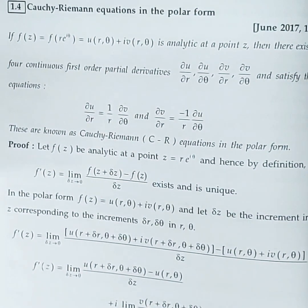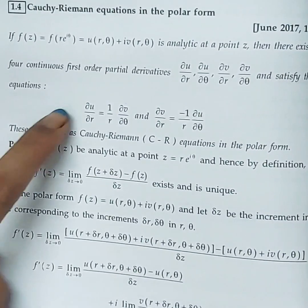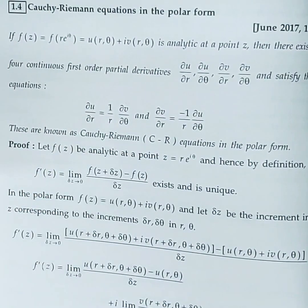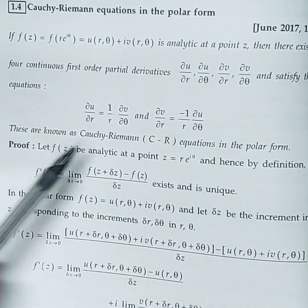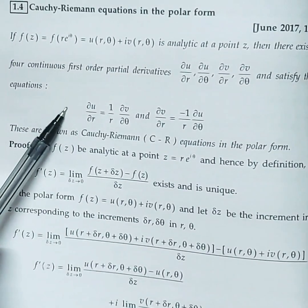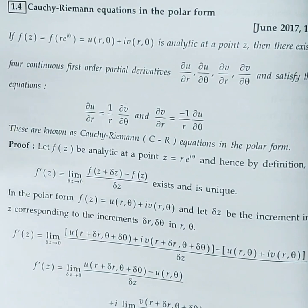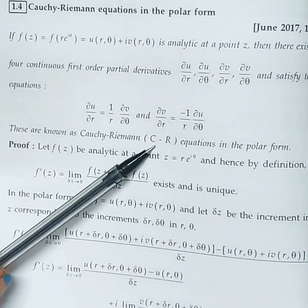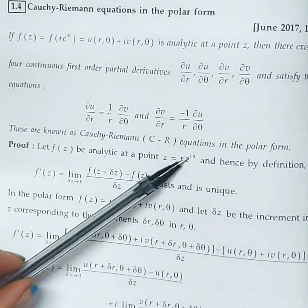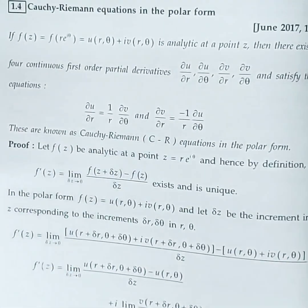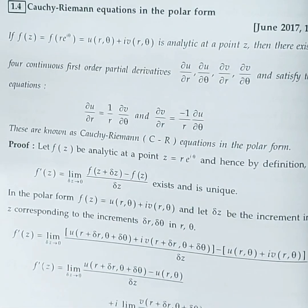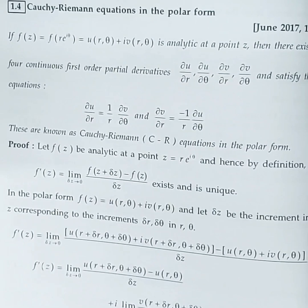What are those CR equations? ∂u/∂r = (1/r)·∂v/∂θ, or equivalently r·u_r = v_θ. Similarly, ∂v/∂r = -(1/r)·∂u/∂θ. This is what we have to prove — these are the CR equations in polar form.